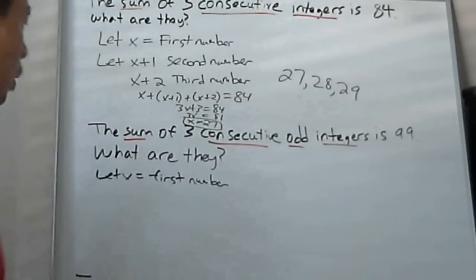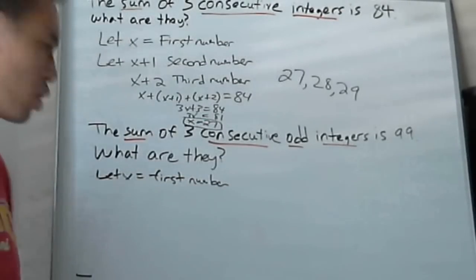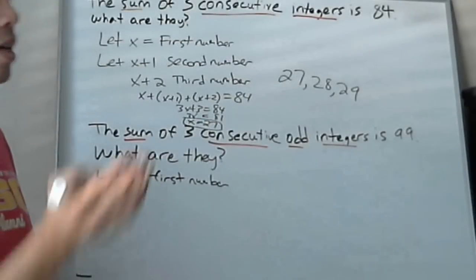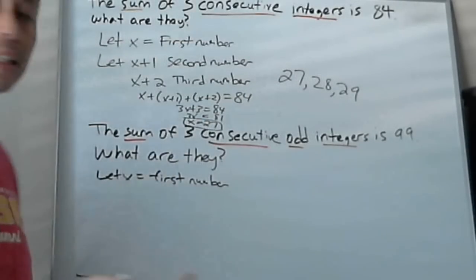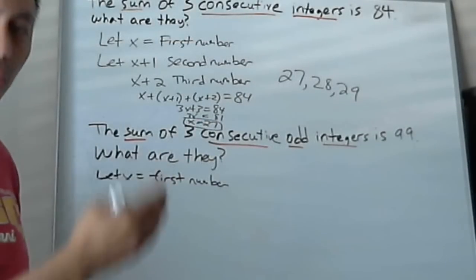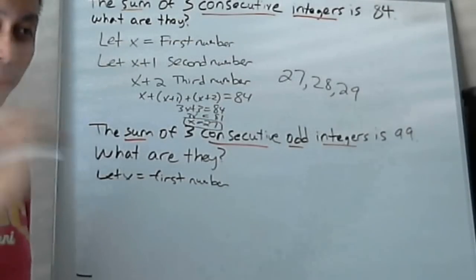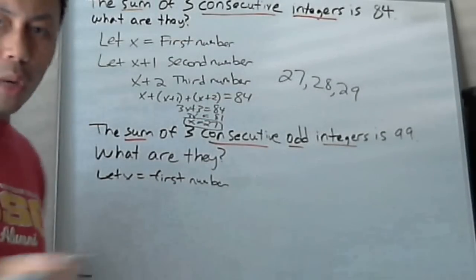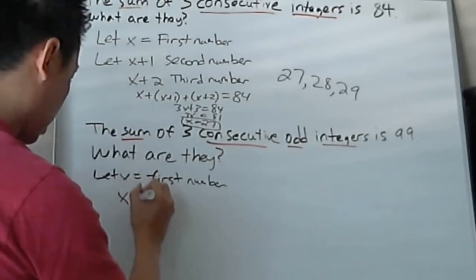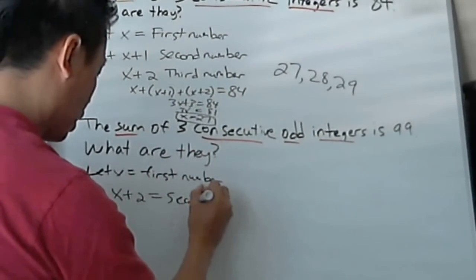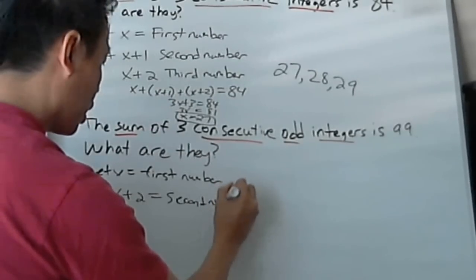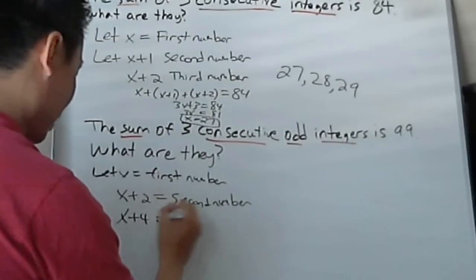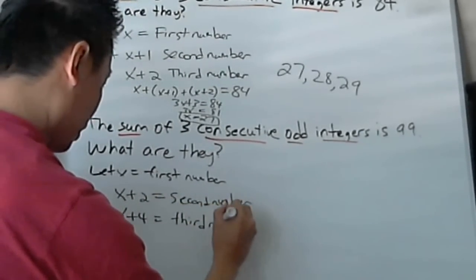And what would the second number be? Well, think about it. If it's consecutive odd, what's the relationship between the second number and the first number? Count odd numbers: 5, 7, 9, 11, 13. What's the relationship between 5, 7, and 9? They're always 2 bigger than the previous number. 7 is 2 bigger than 5, 9 is 2 bigger than 7. So it's always going to be plus 2. So x plus 2 is the second number. And then the third number has to be x plus 4.